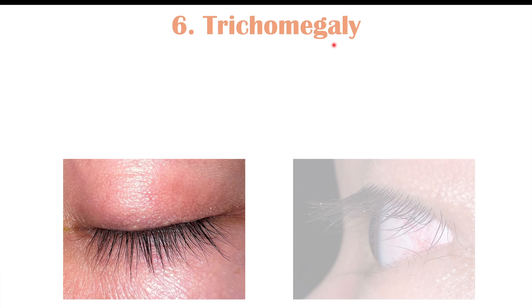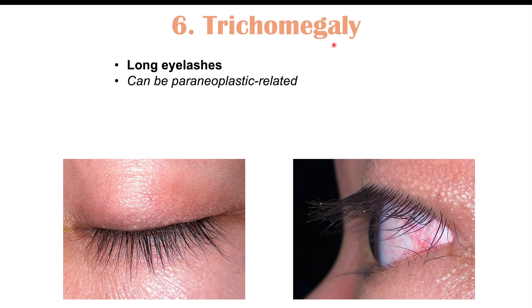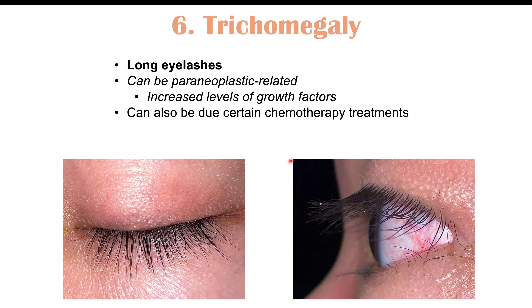Another finding on the face, though more rare, is trichomegaly — abnormally long eyelashes. It can be paraneoplastic, with growth factors released by the cancer causing excessive eyelash growth. More commonly, this finding appears in lung cancer patients after chemotherapy treatment, though it can occur before treatment as well.